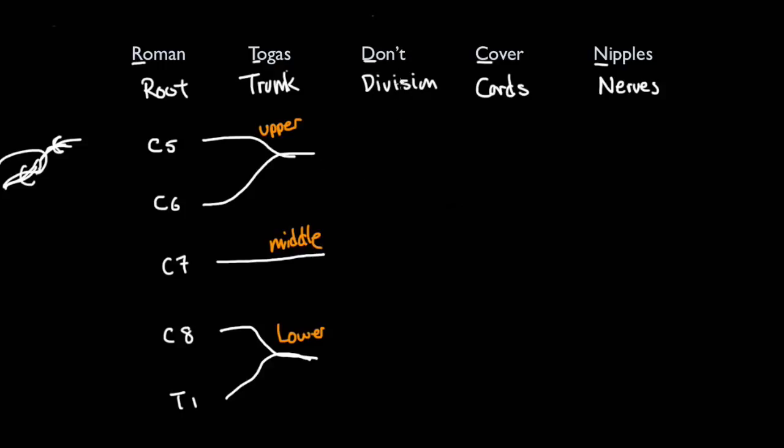Next part, we've got divisions, and lucky for us, everything is divided into two divisions. We've got an anterior and a posterior division. Let's draw in the posterior division first, so everything splits into the front and back. It comes to the back, middle also splits into two, this one comes behind, and the lower also has got a posterior division coming behind, and all of them fuse into one.